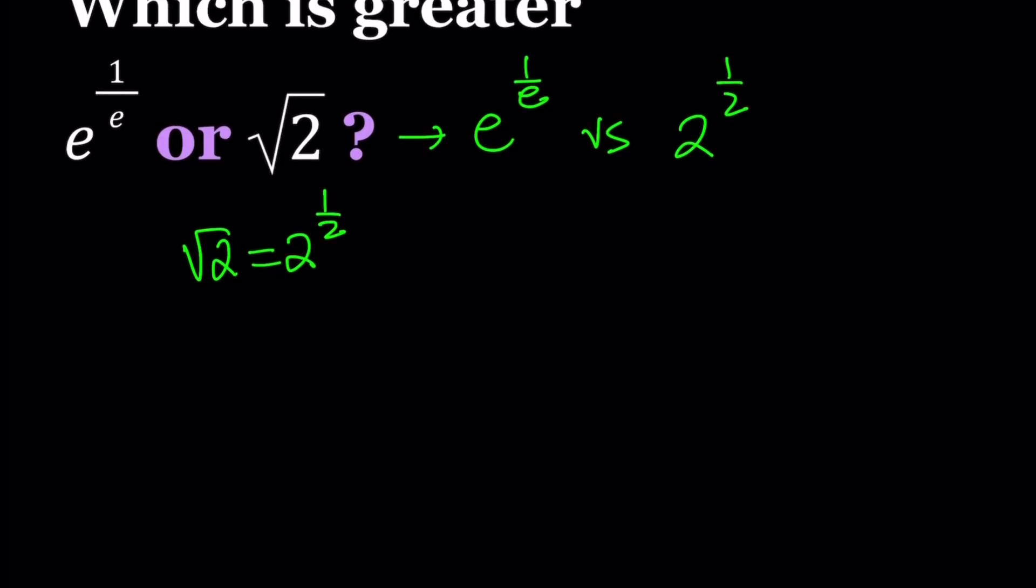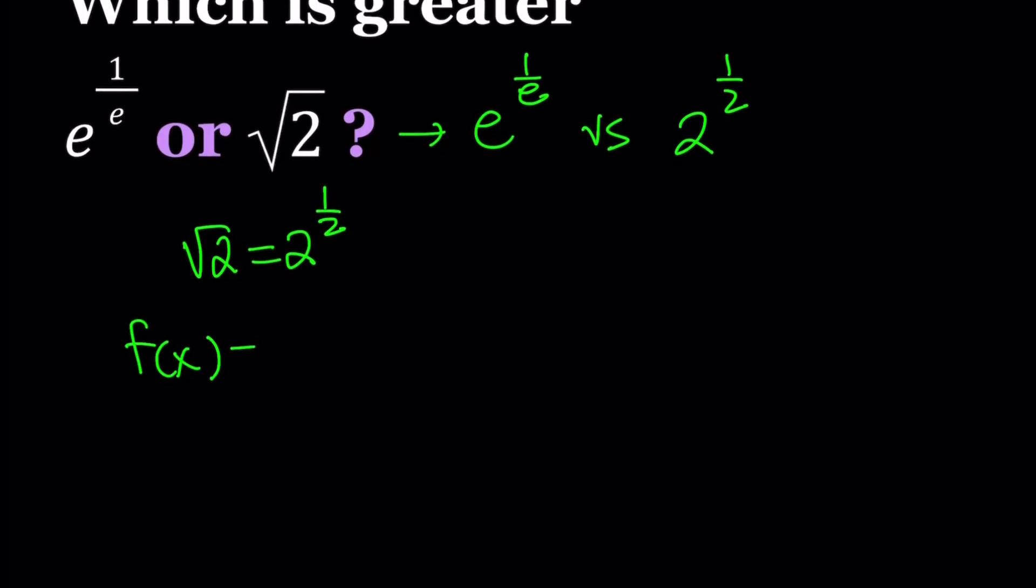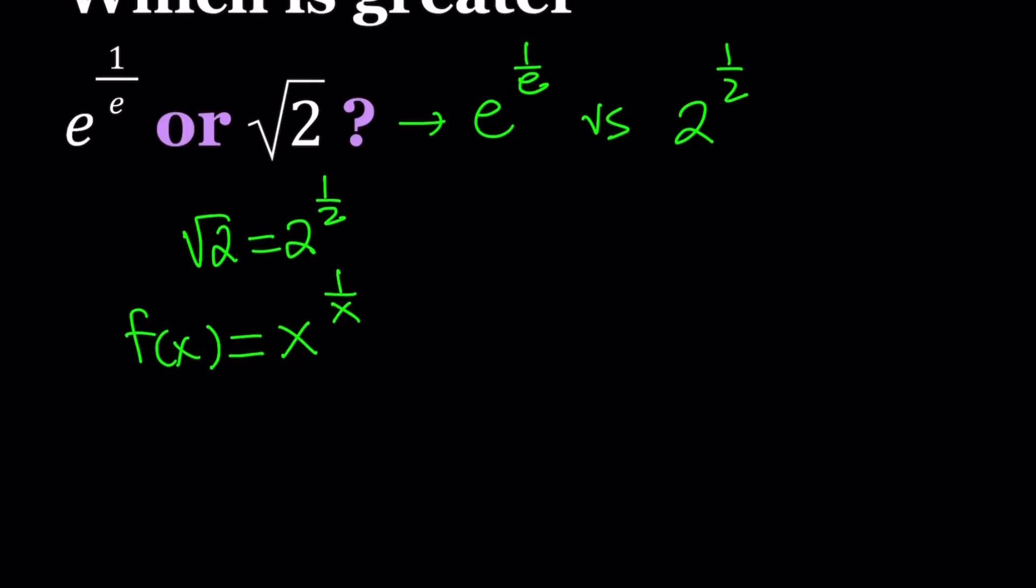Awesome. Now, let's go ahead and define our function as f of x equals x to the power 1 over x. As you remember, we looked at x to the power x before, and we use that a lot for comparing two numbers. But this time it's a little different. And at the end, like I said earlier, I'm going to show you the graph of it.